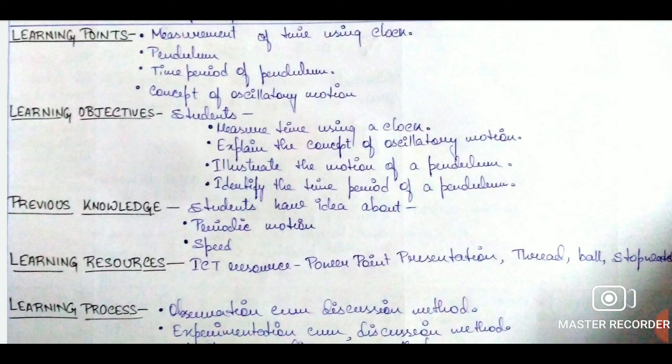Then our learning objectives. In learning objectives, we write what the students are expected to do once the lesson is over. For example, students will measure time using a clock. We will not use the phrase 'will be able to' — we simply write 'students' and then all our objectives, because a lesson plan is always written in present tense, not future tense.